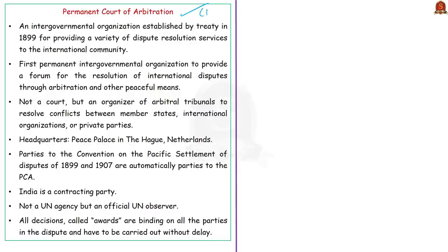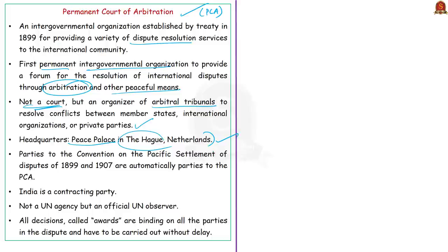The Permanent Court of Arbitration (PCA) is an intergovernmental organization established by treaty in 1899 to provide dispute resolution services to the international community. PCA was the first permanent intergovernmental organization to provide a forum for resolving international disputes through arbitration and other peaceful means. Importantly, PCA is not a court but an organizer of arbitral tribunals to resolve conflicts between member states, international organizations, or even private parties. Its headquarters is at the Peace Palace in The Hague, Netherlands. India is a contracting party to PCA, but PCA is not a UN agency — rather an official UN observer. All PCA decisions are called awards and are binding on all parties.